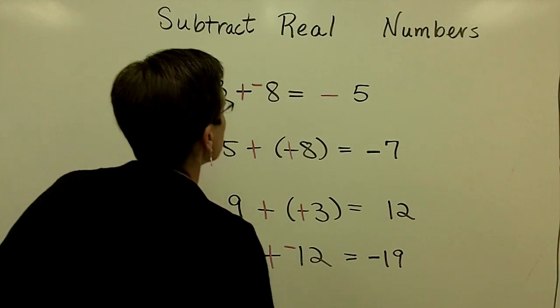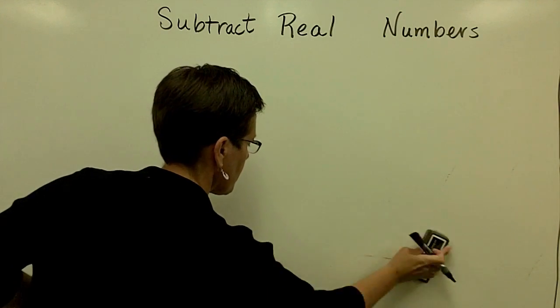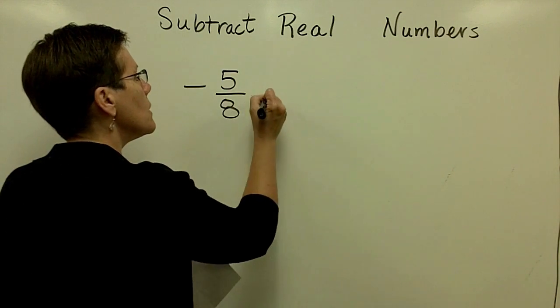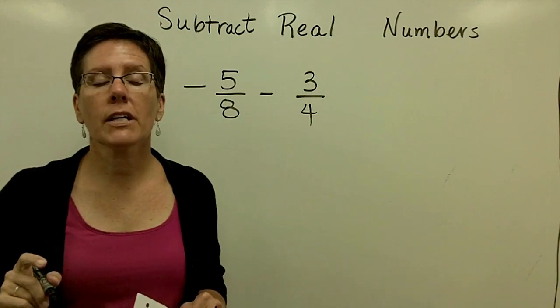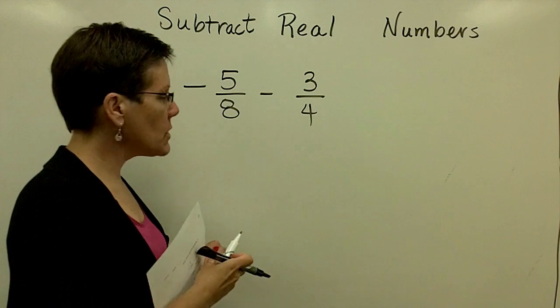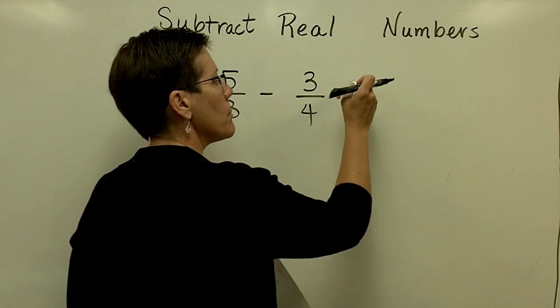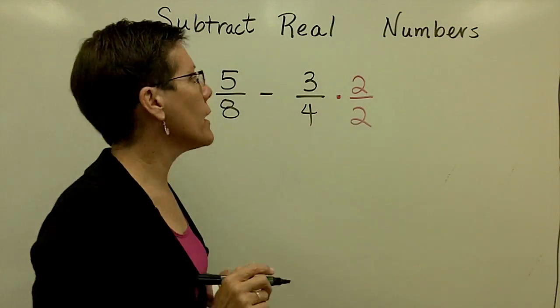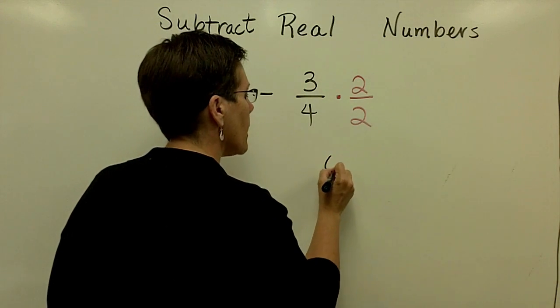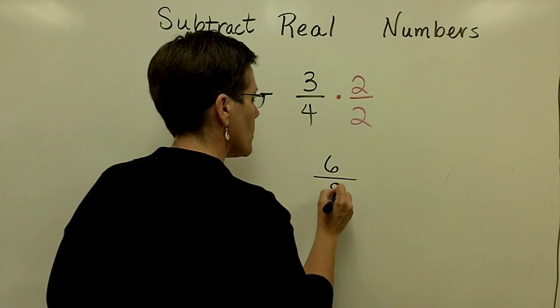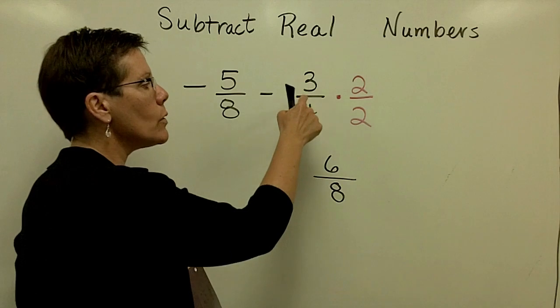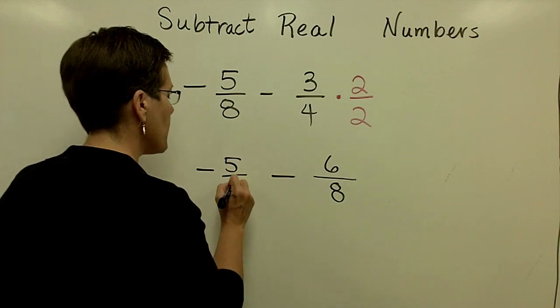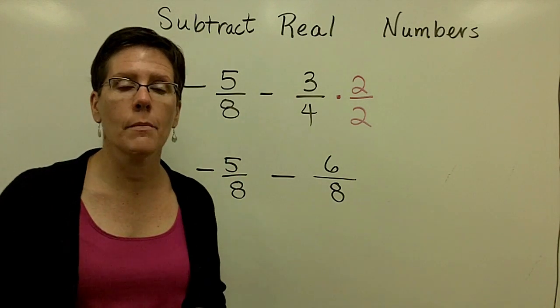Let's now do a problem with fractions and signs. A negative 5 eighths minus 3 fourths. These two fractions have a common denominator of 8. All that is required of me is to make that 4 become an 8 by multiplying it by 2—in other words, 2 over 2 or a value of 1. So, this 3 times 2 in that numerator will be a 6, and the 4 times 2 in the denominator is 8. Remember that 6 eighths is an equivalent fraction to 3 fourths. Whatever you do, don't go back and reduce it. You need it to make it look like this so that these two fractions would have a common denominator.